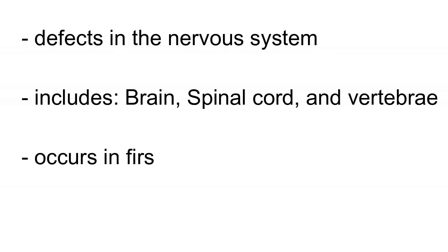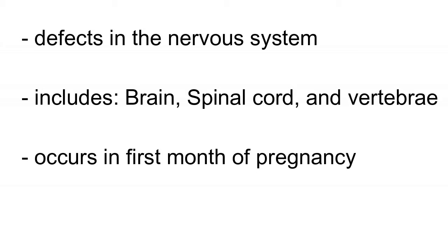Neural tube defects are defects that happen in the nervous system, which includes the brain, the spinal cord, the meningeal layer, and the vertebral column as well. These defects will usually happen in the first month of pregnancy, before the woman even knows that she is pregnant.